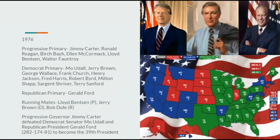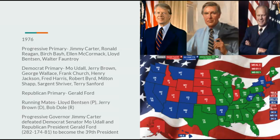Going on to 1976, Progressives would nominate Jimmy Carter with Lloyd Bentsen, Democrats Moe Udall with Jerry Brown, and Republicans Gerald Ford with Bob Dole. Progressive Governor Jimmy Carter would defeat Democrat Senator Moe Udall and Republican President Gerald Ford, 282 to 174 to 81, to become the 39th President.